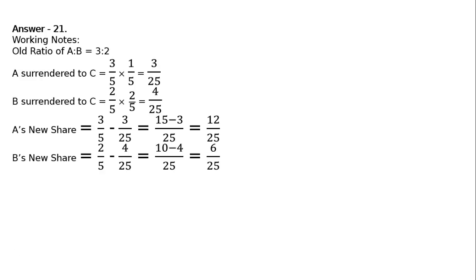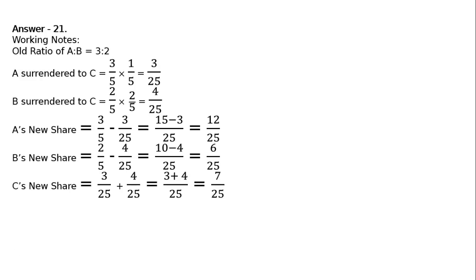And C's new share is: A is surrendering to C 3 upon 25, and B is surrendering to C 4 upon 25. We will be adding these two: 3 upon 25 plus 4 upon 25. The surrendered portion of A and B — LCM 25 — 3 plus 4 is 7 upon 25.